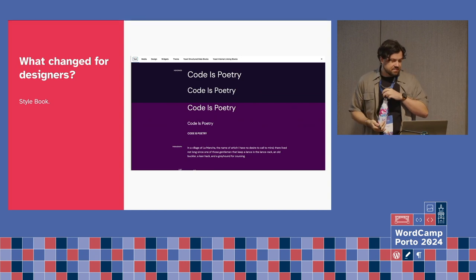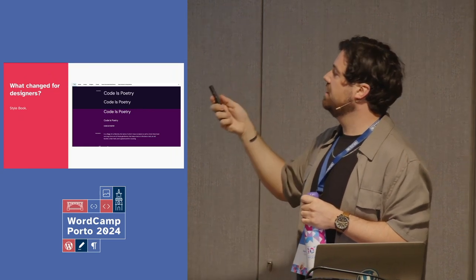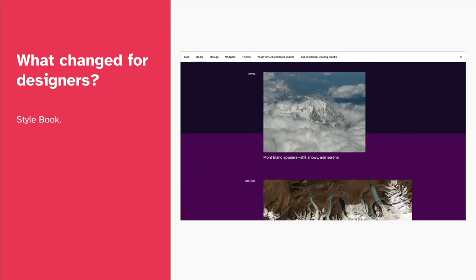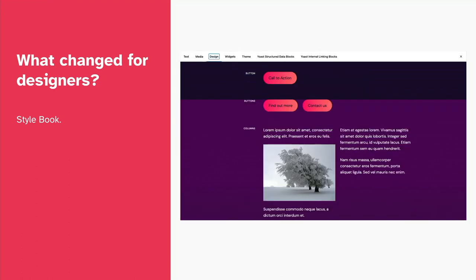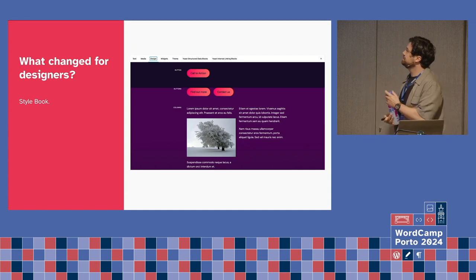I love the style book: after you define everything — the headings, spacing, paddings, et cetera — you have a style book and you don't need to create dummy content to see all the results. You have tabs at the top: Text, Media, Design, Widgets. You can explore and see the results of the global styles you set. This works per style variation — it's amazing. It's like writing documentation in Figma.